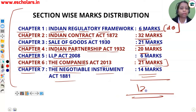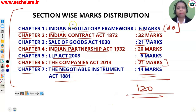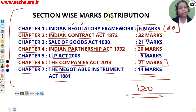So you now have a lot of clarity about the 120-mark distribution. LLP and Chapter 1, Indian Regulatory Framework, will have only direct questions. The rest will have a mix of direct and case-based questions. I will also tell you exactly how many marks are direct and how many are case-based for each chapter — this is very relevant for cracking the exam.